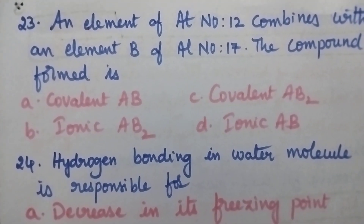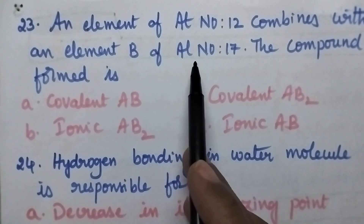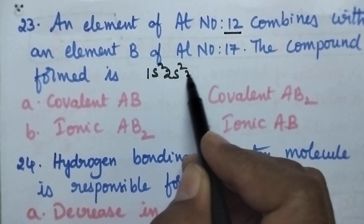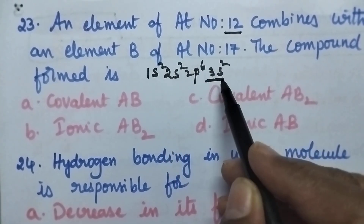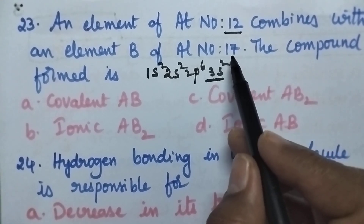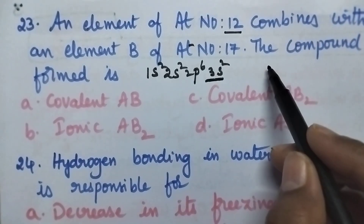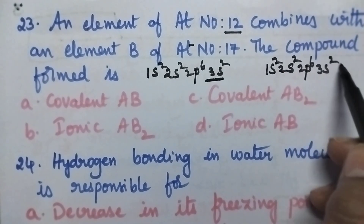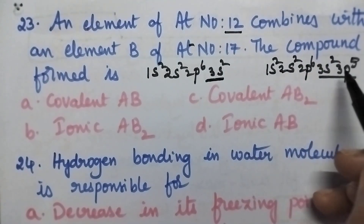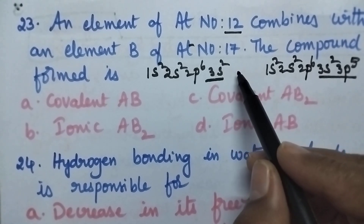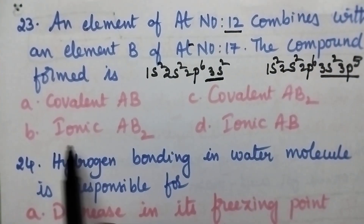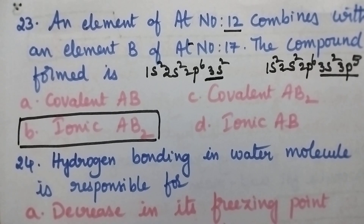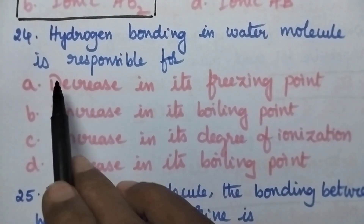An element A with atomic number 12 has configuration 1s², 2s², 2p⁶, 3s² — its outermost orbit contains 2 electrons. Element B with atomic number 17 has configuration 1s², 2s², 2p⁶, 3s², 3p⁵ — it is short of 1 electron. Since A has 2 electrons and B needs 1, they form an ionic bond with structure AB2. Option B — ionic AB2 — is the right answer.